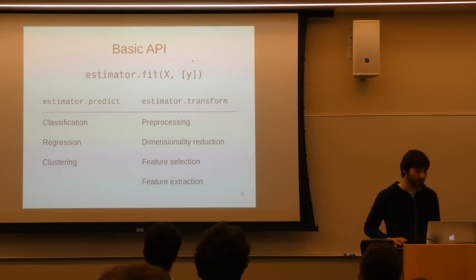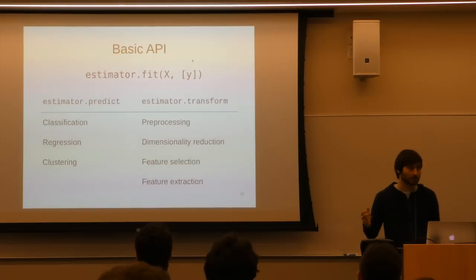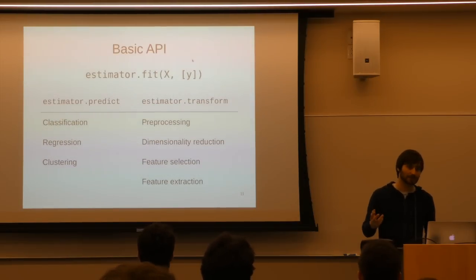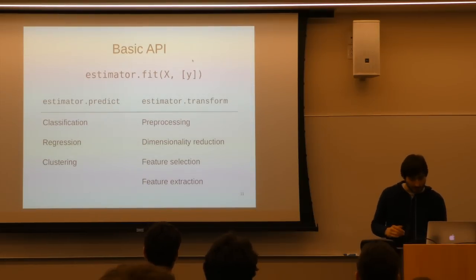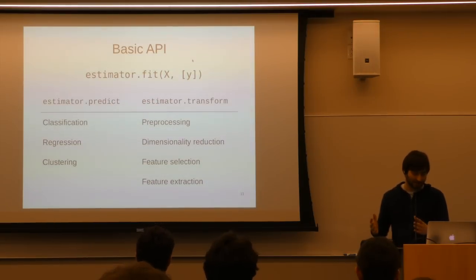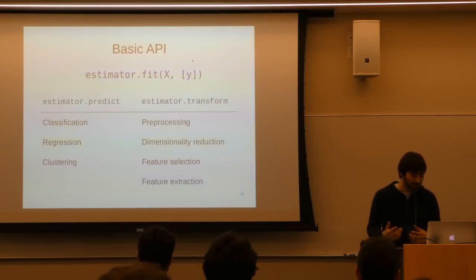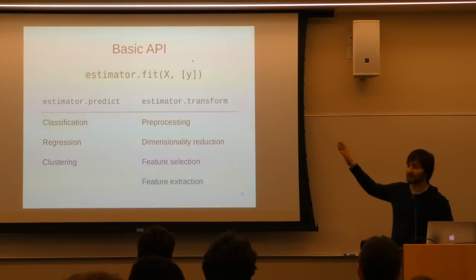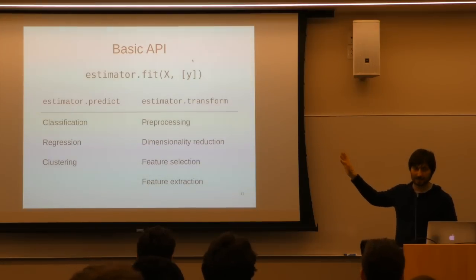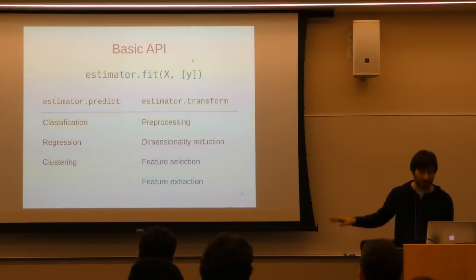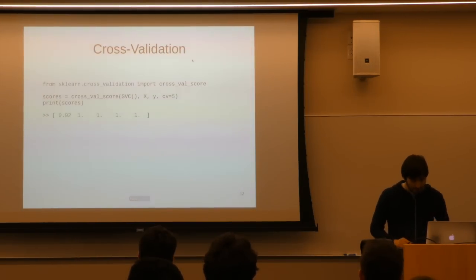The basic API is: fit() to fit the model — always with X, sometimes also with supervised labels Y — then predict() if you want a new labeling as in classification, regression, or clustering membership, and transform() when you want a new view of your data, such as in preprocessing, dimensionality reduction like PCA, feature selection, or feature extraction. These are basically the only three methods you need to remember: fit, predict, and transform. They always operate on NumPy arrays.